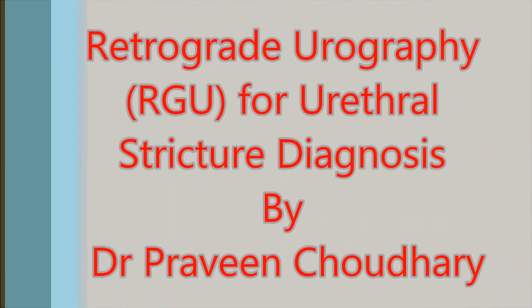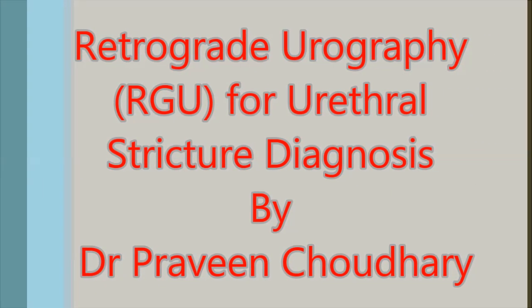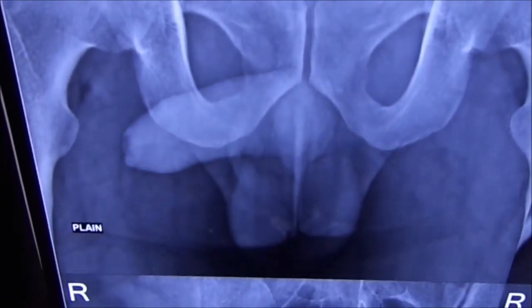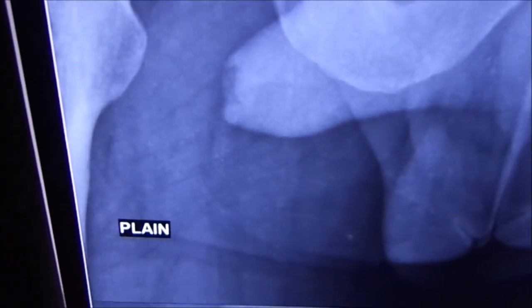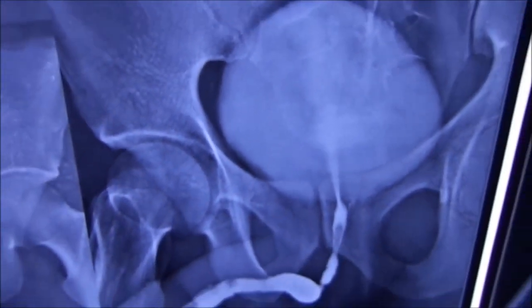Hello friends, this is a video of a retrograde urogram. In the first picture you can see the plain x-ray depicting the pelvis and the soft tissue shadow. This is the next x-ray where the bladder is seen to be full with the dye.